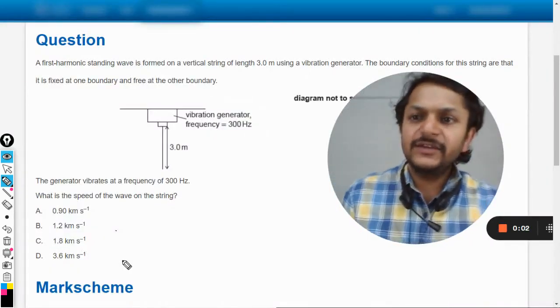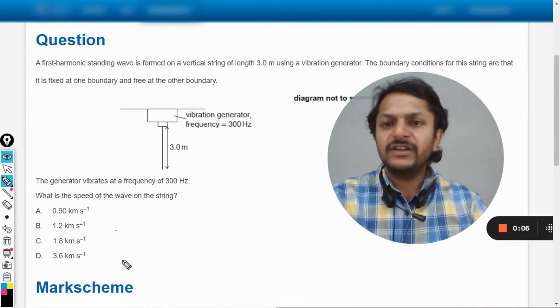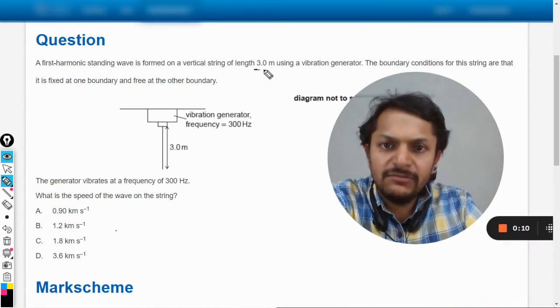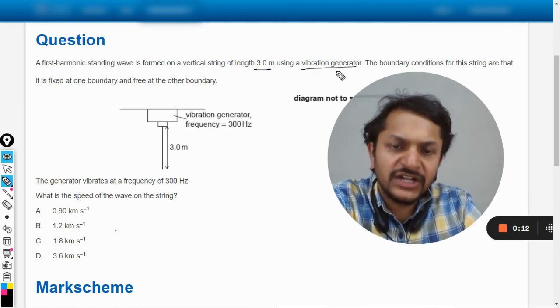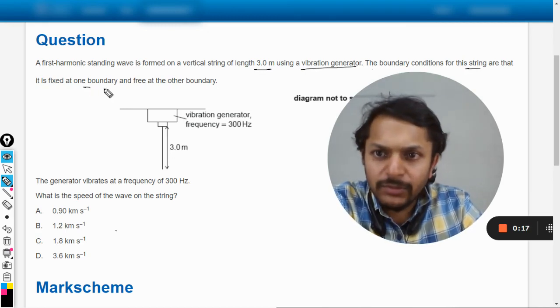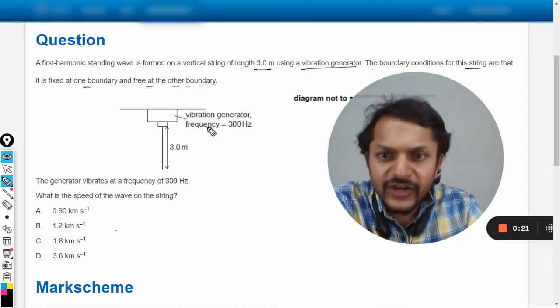Okay dear students, let us see what is there in this question. A first harmonic standing wave is formed on a vertical string of length 3 meters using a vibration generator. The boundary conditions for this string are that it is fixed at one boundary and free at the other boundary, as shown in the figure.